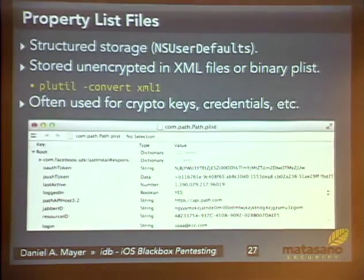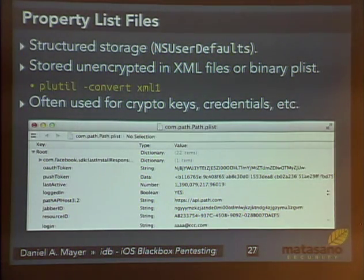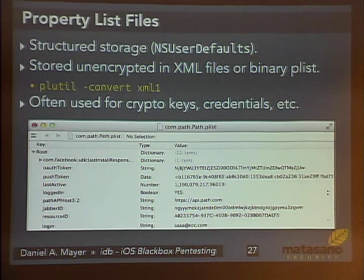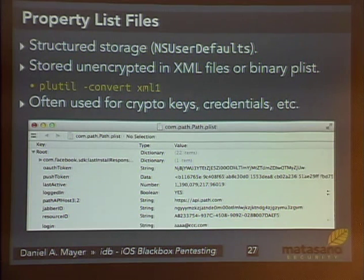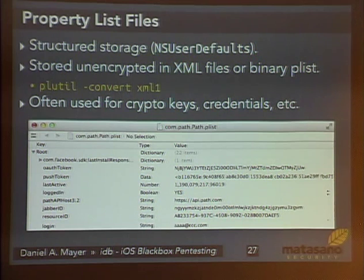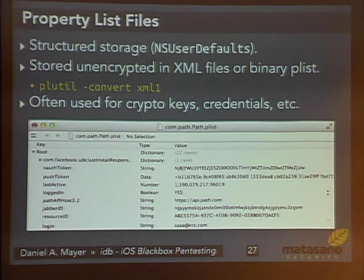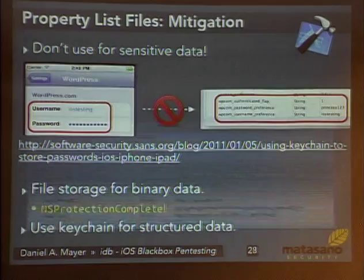The second very common thing on iOS is plist files. If you use `NSUserDefaults` — which is the standard way to store user preferences — that ends up in a plist file, which is nothing more than an XML file. Very often they're used for keys and credentials. There was the Starbucks news recently where tokens were leaked from files. I also looked through some apps and found that the Path application stores their OAuth token in a plist file, unencrypted. So this seems to be really common. Don't do that.